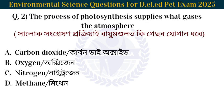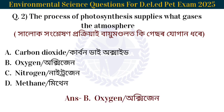Next question: The process of photosynthesis supplies what gas to the atmosphere? Halukongleson procreate biomondolot hi gasol yugan dhar e. The answer is oxygen. The process of photosynthesis supplies oxygen to the atmosphere.